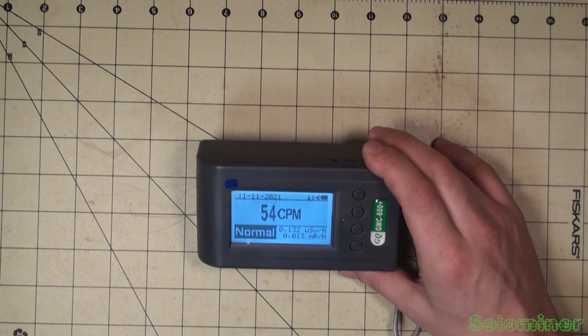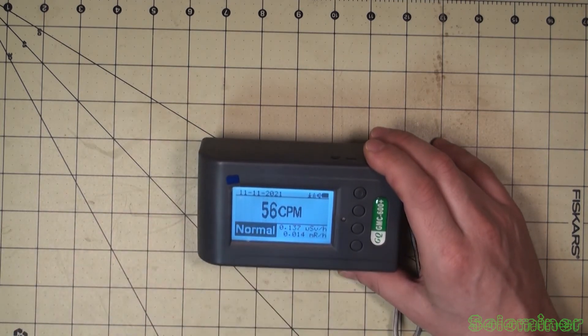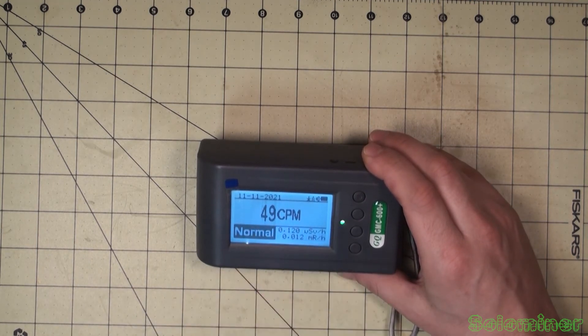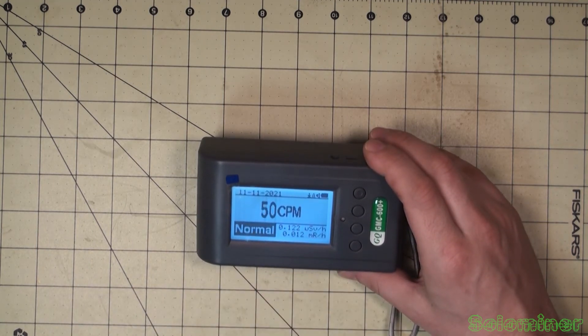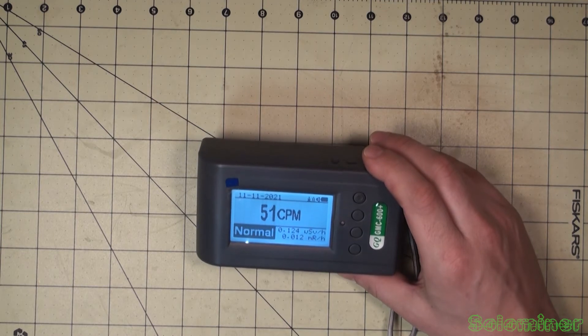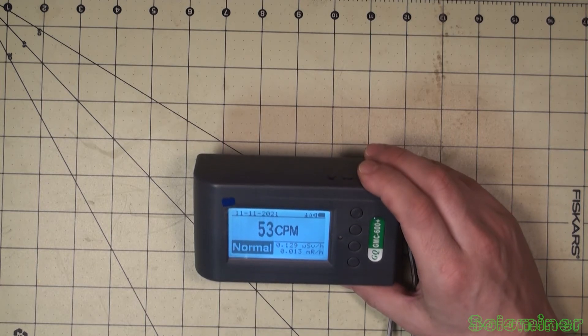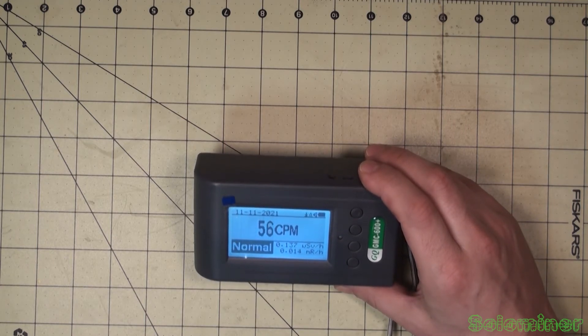And then we also have millirem, which is kind of an outdated measurement but it's still good to have. Eventually I'm going to set this thing up so it reads off differently. I'm probably going to put the sieverts up top because that's the most common measurement that I see for taking radiation. Besides that, I'm just going to read the manual and kind of see what all this is about because there's a lot of things that you can do with this.